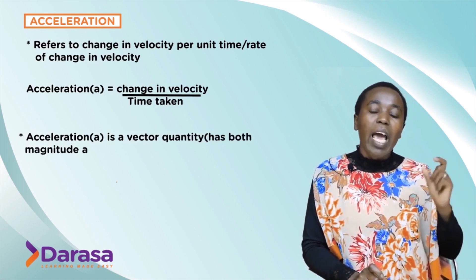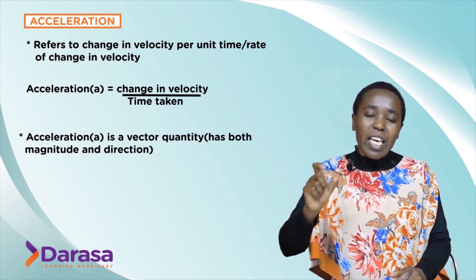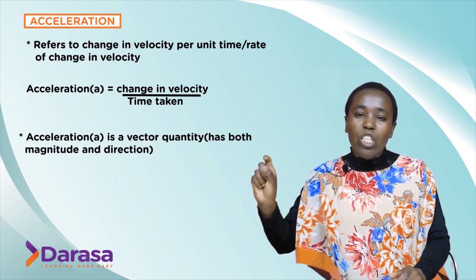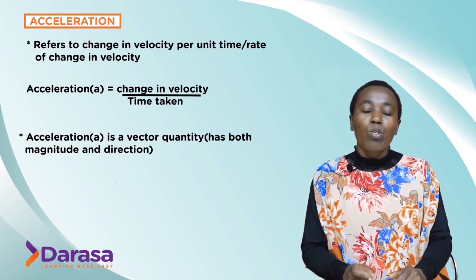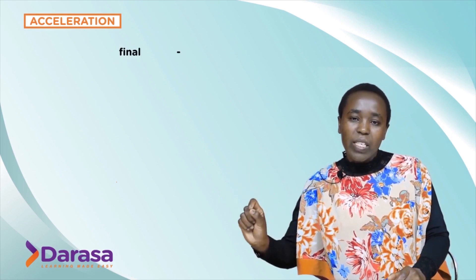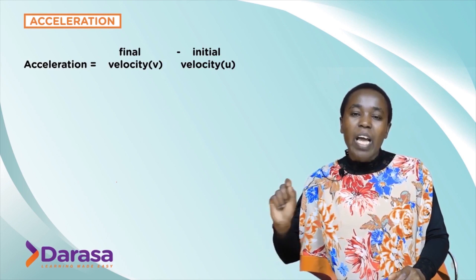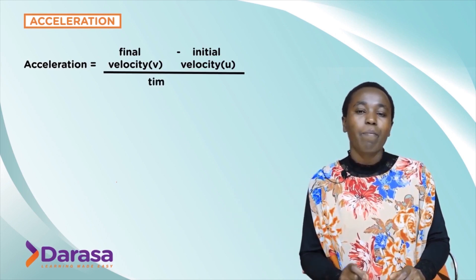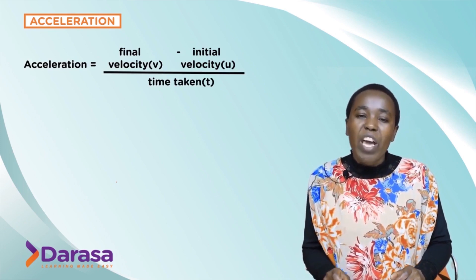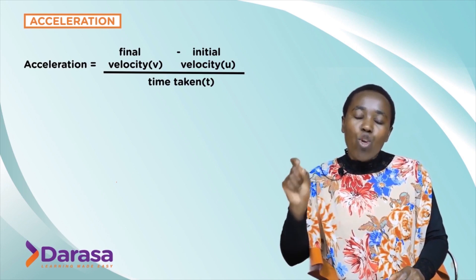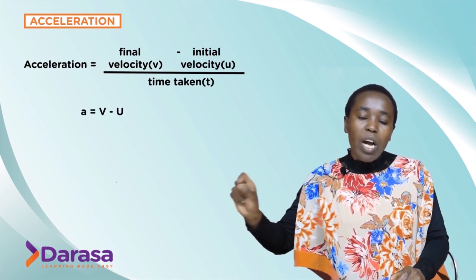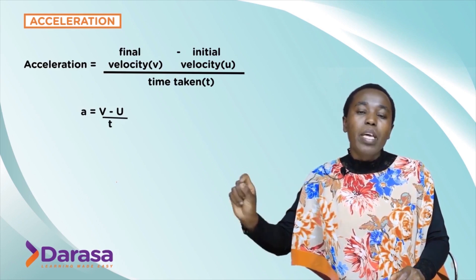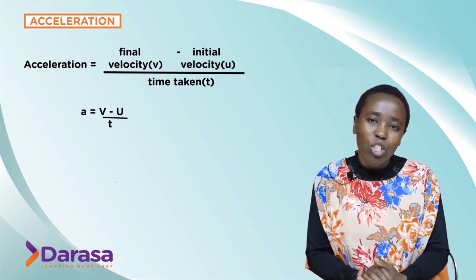Since velocity is a vector quantity and time is a scalar quantity, acceleration 'a' is also a vector quantity — it has both magnitude and direction. We use a capital letter V for final velocity and a small letter u for initial velocity. So we have: a = (v − u) / t.